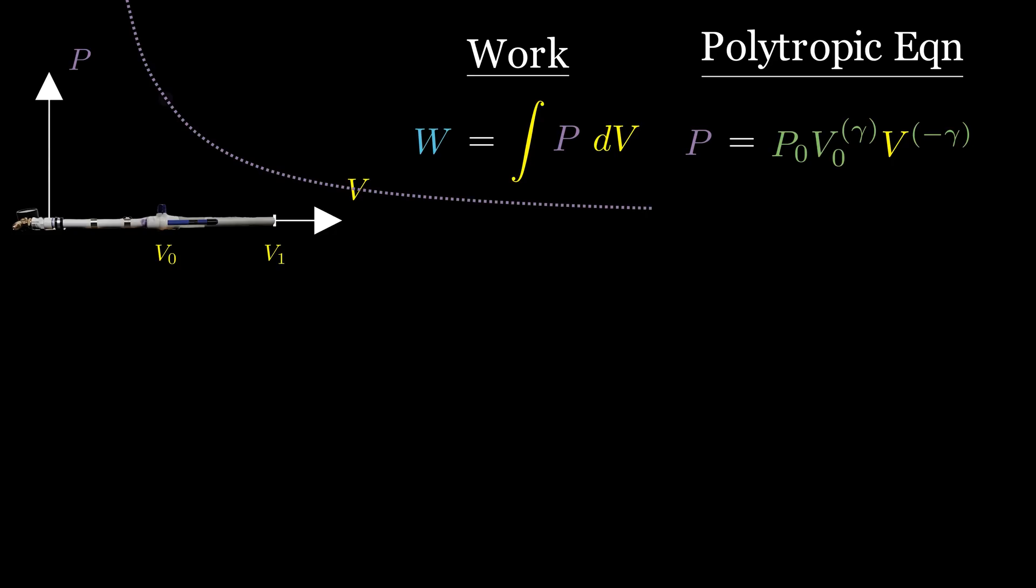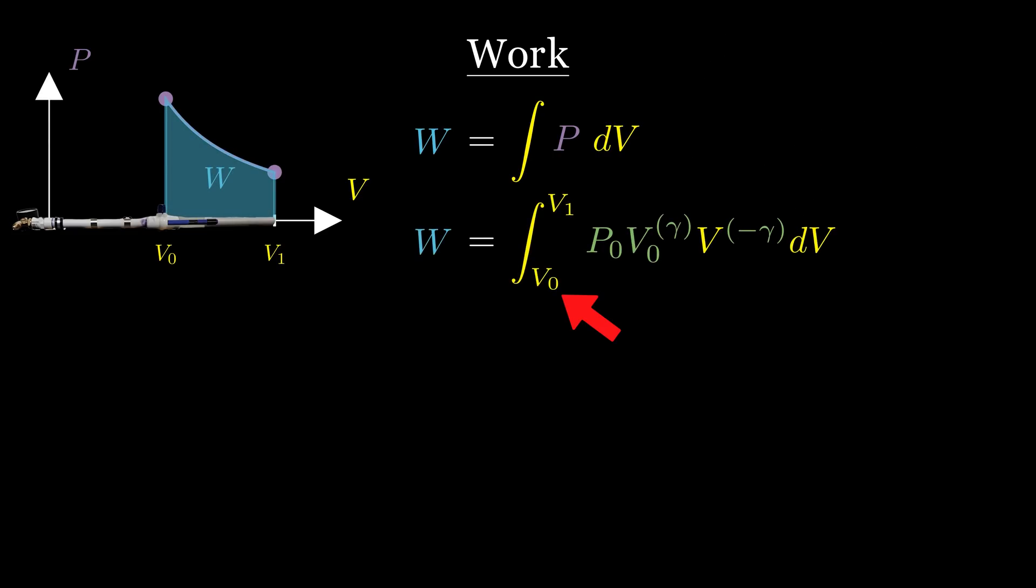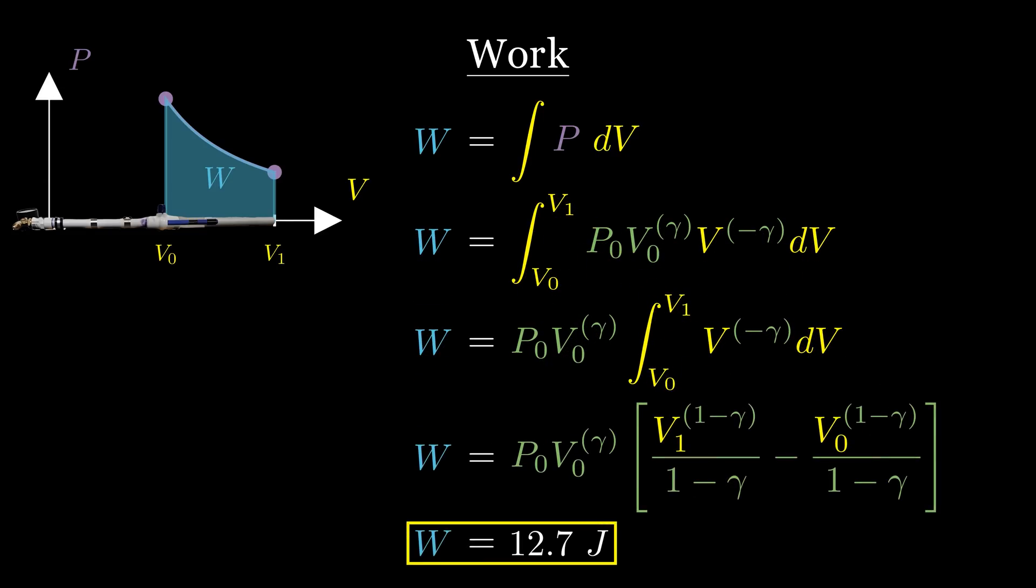And when plotted on the graph, it looks like this for all volumes. So to calculate the work done on the dart as the air expands, which remember is the area under this curve, I simply integrate the pressure function from the initial volume to the final volume, which after using some calculus and lastly plugging in all these known values got me about 13 joules.